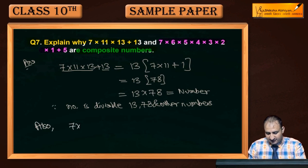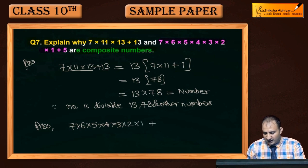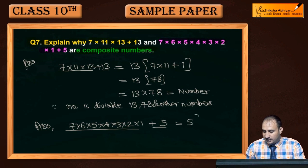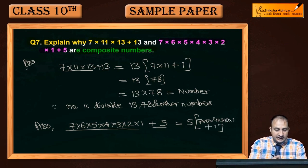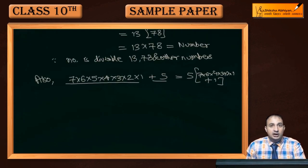अब बात करें 7×6×5×4×3×2×1 + 5 की। Again, यहां दो terms में से 5 common लेने के बाद आपको मिलेगा: 5×(7×6×4×3×2×1 + 1)।